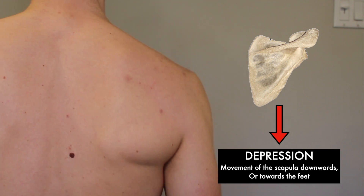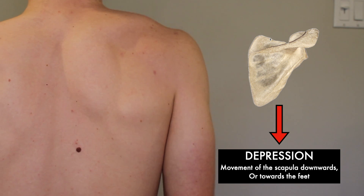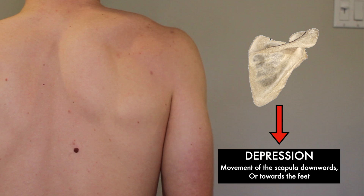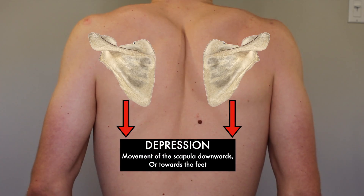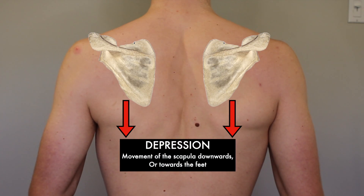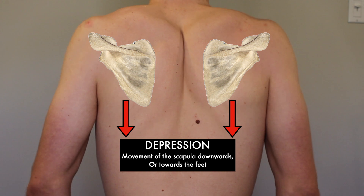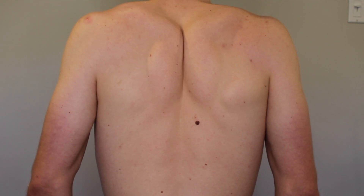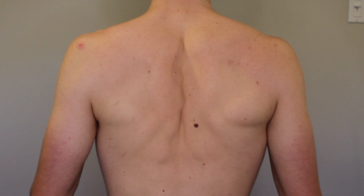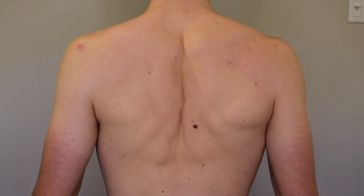Depression of my scapula here has nothing to do with the shoulder blade's emotions — I mean, as far as I know. I like to think that we're pretty open with each other, so if something was going on, they'd probably let me know. Depression of the scapula is the exact opposite of elevation. Instead of the shoulder blade moving upwards, it moves downwards.